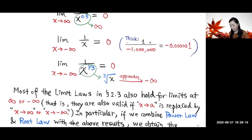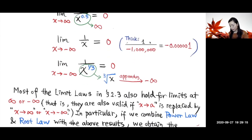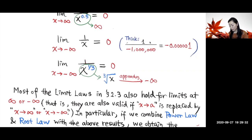Similarly, 1 over x to the one-third power — the cube root of x — as x goes to negative infinity also goes to negative infinity. The denominator goes to negative infinity but the numerator stays as one, so the limit equals zero.